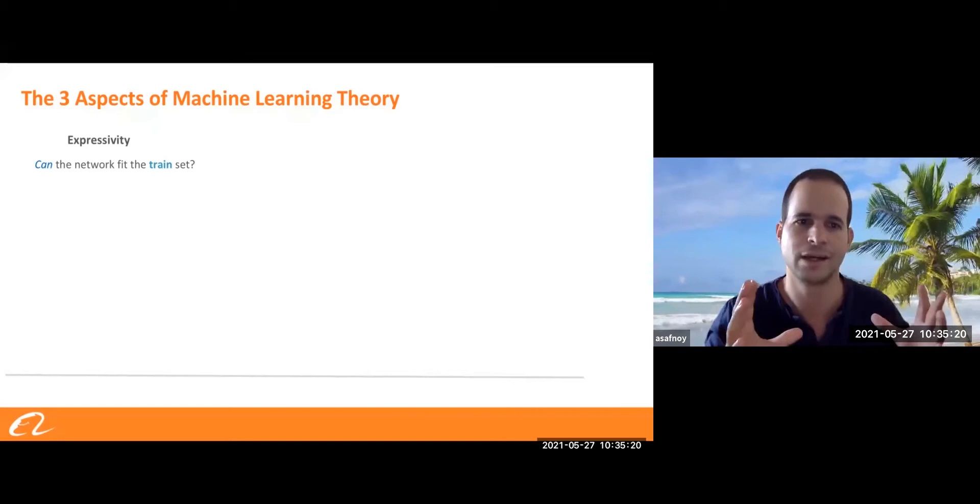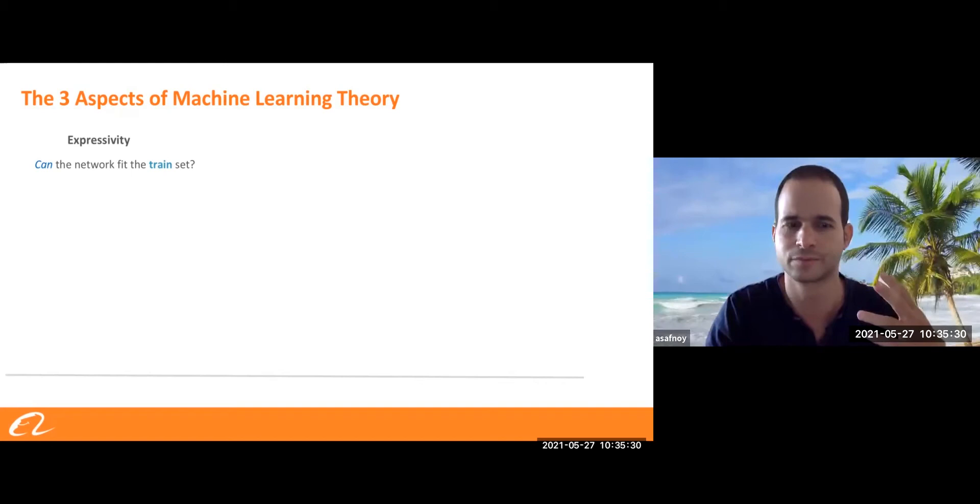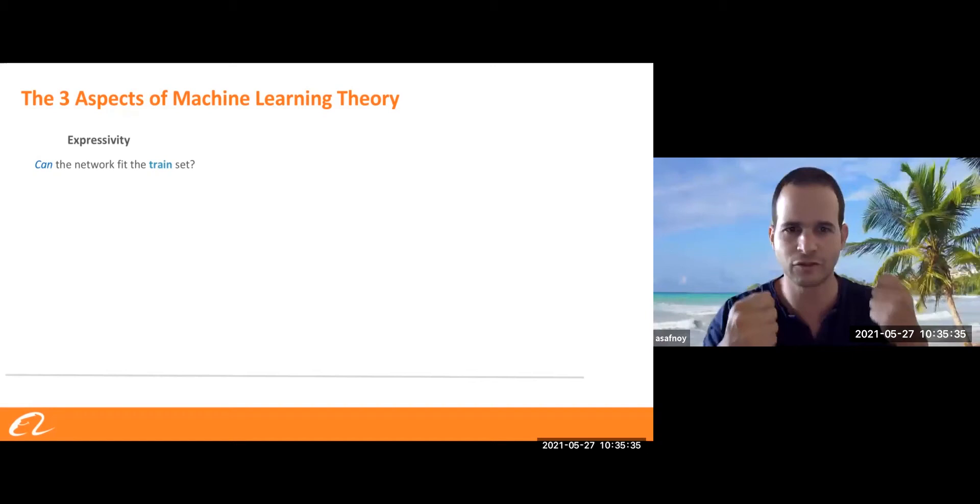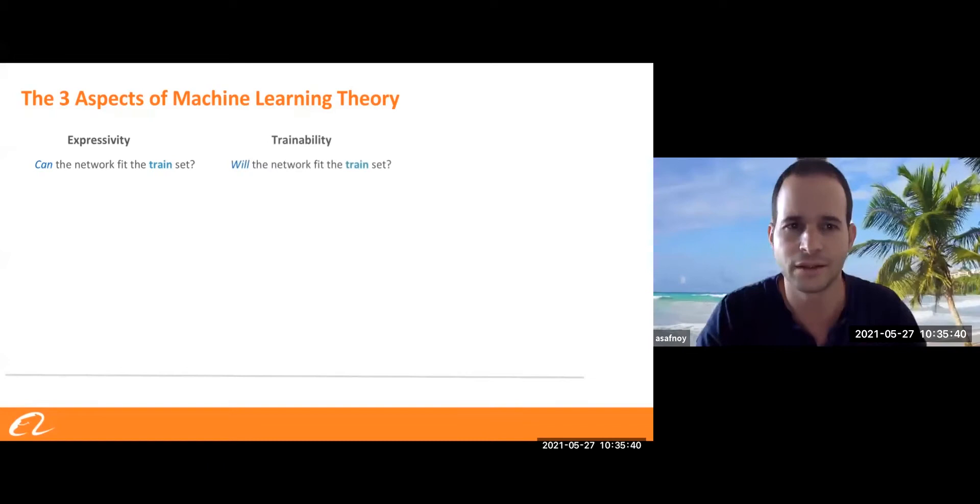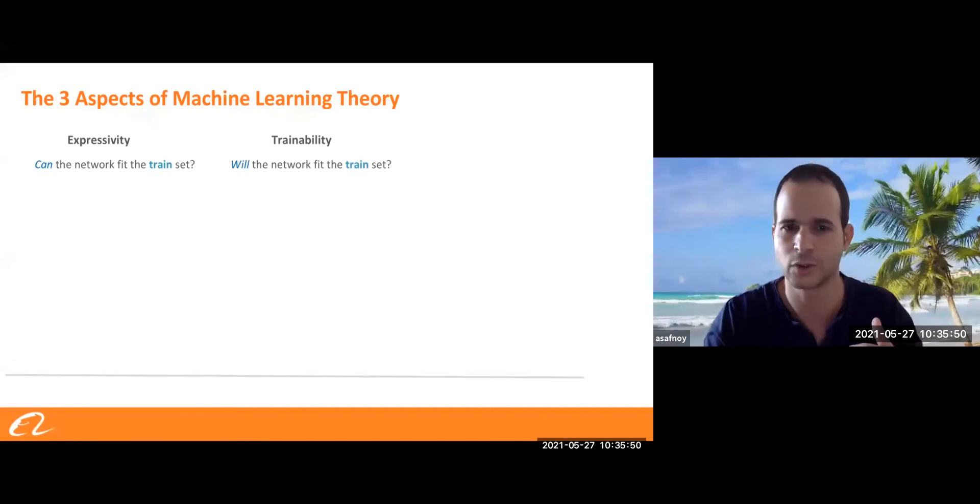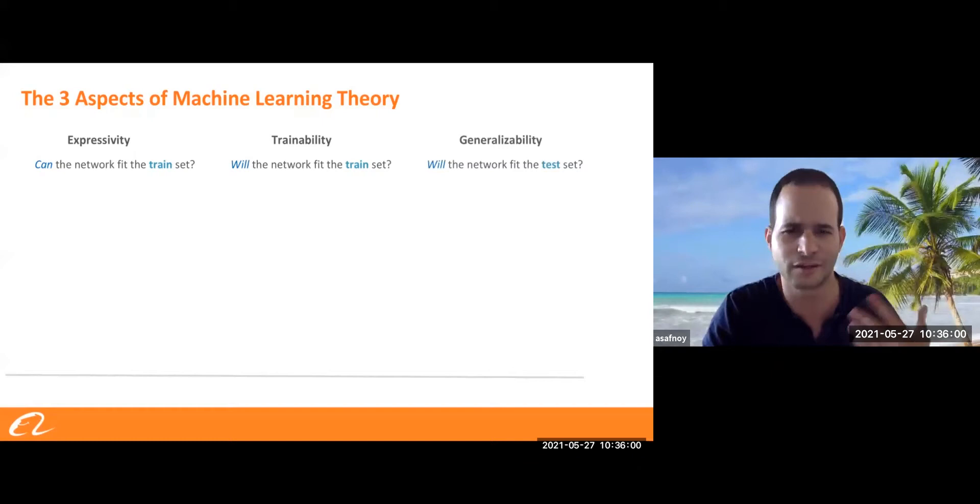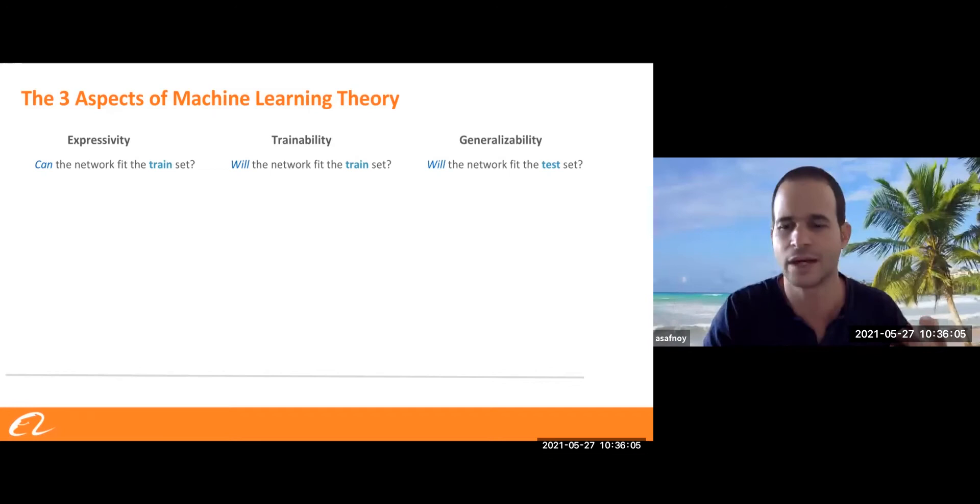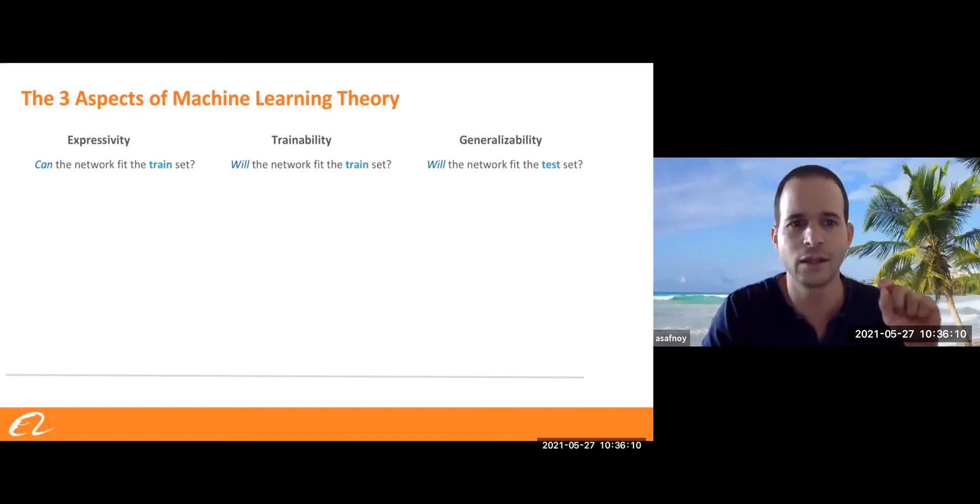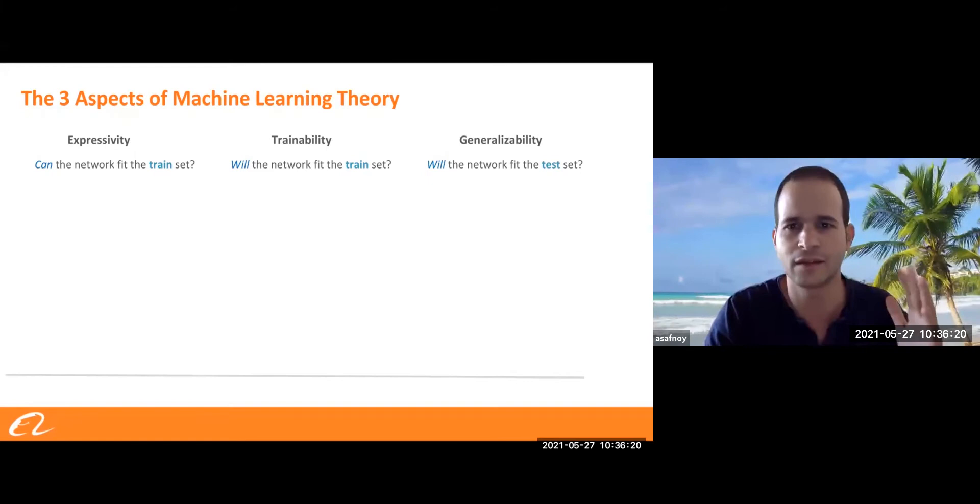When I talk about over parametrization, I want to put everything on the same axis, so we understand the gap. So the three aspects of deep or machine learning are expressivity. I got a model. Can someone fit the network to the train set? So the final loss will be zero. Trainability. We will discuss this mainly today. Will the network fit the train set given a structure and optimization algorithm? Now, we are in charge to do the optimization from a random initialization. We want to achieve a zero train loss. And of course, the holy grail is generalizability. Will the network fit the test set, the distribution?